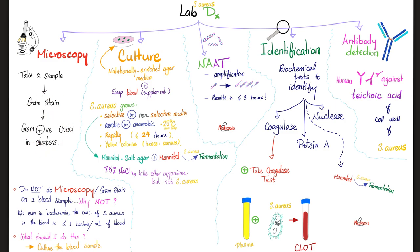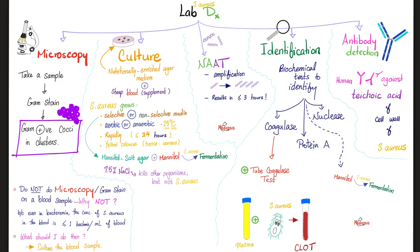Under the microscope you will see gram-positive — i.e., purple — cocci in clusters. You can examine samples from the skin using microscopy. However, you cannot diagnose bacteremia by microscopy alone, because even with Staph bacteremia the concentration in blood is less than one bacterium per milliliter — not enough to see under the microscope.